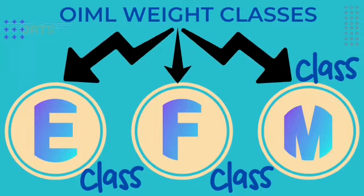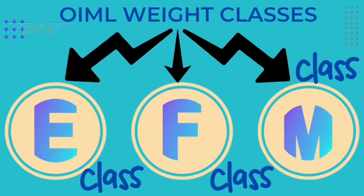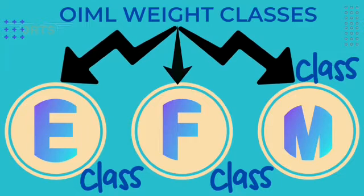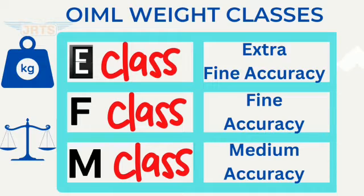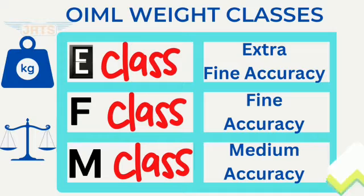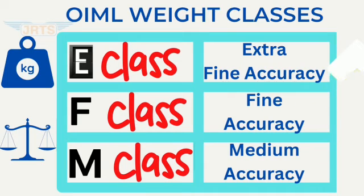OIML weights are mainly classified into three types: the first is E class weights, the second is F class weights, and the third is M class weights. Here, E stands for extra fine accuracy weights, F stands for fine accuracy weights, and M stands for medium accuracy weights.